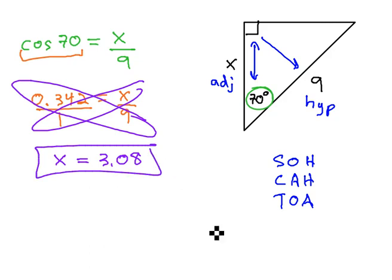So, that missing side, that adjacent side must be 3.08 units.